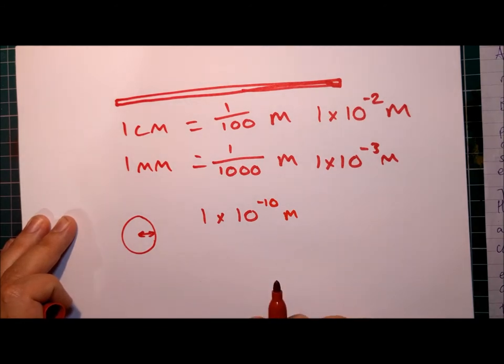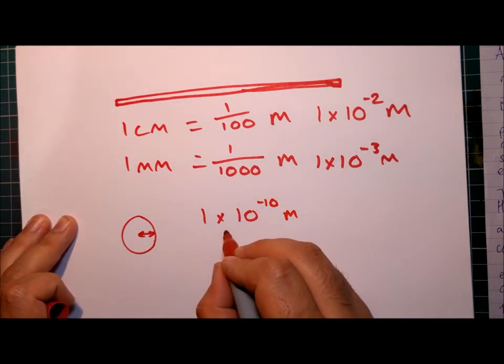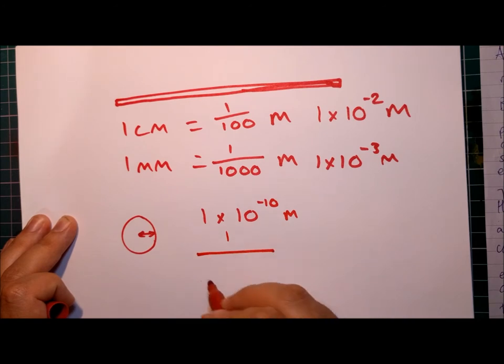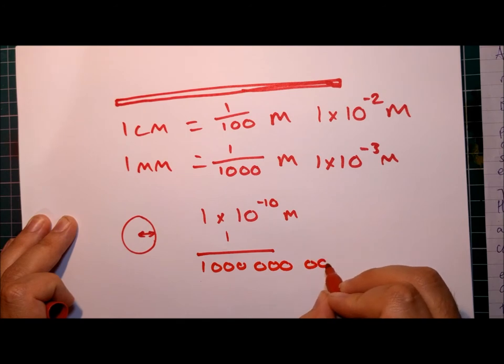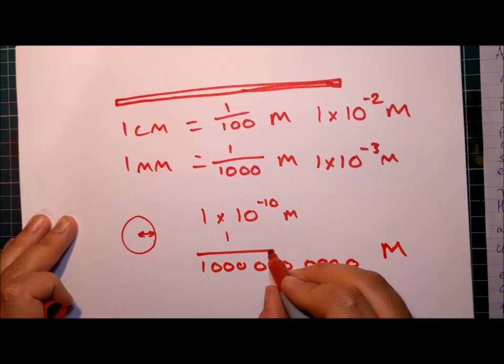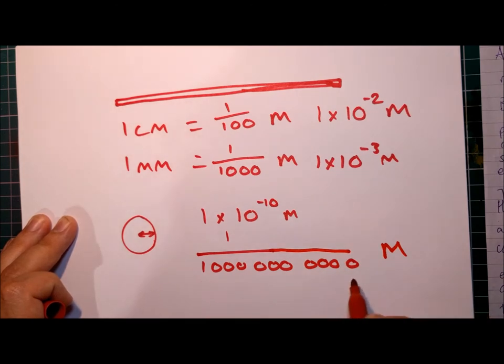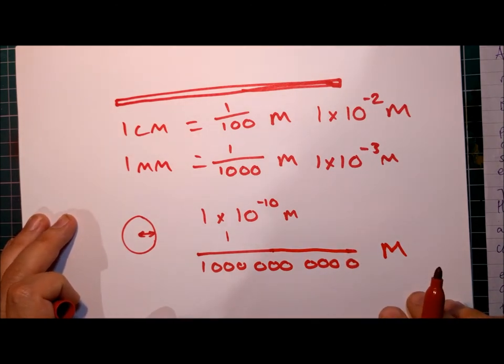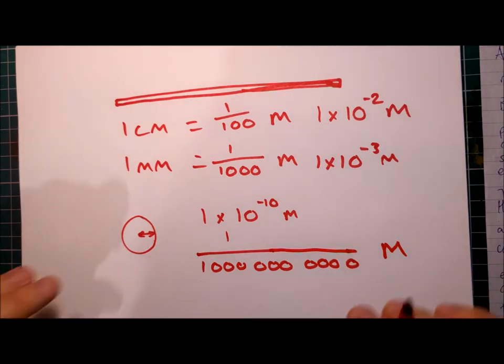So one times ten to the minus ten meters. Another way of writing that is that it would be one over ten billion of a meter. I'm not even sure what name you give to that number. It's so huge. So atoms are small.